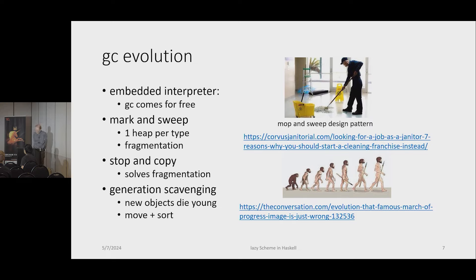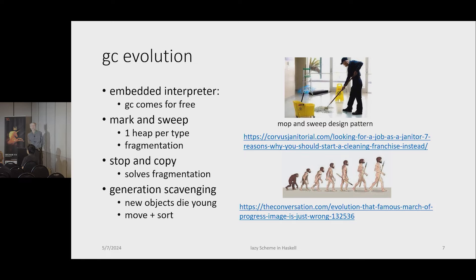Speaking of garbage collection, I wanted to mention something. This is an embedded interpreter — I didn't implement garbage collection, I got it for free. But in a future version I might want to implement a garbage collector, maybe in Rust. Prototyping the garbage collector in Haskell is very useful because you can make sure it's reliable before you try a more low-level implementation.